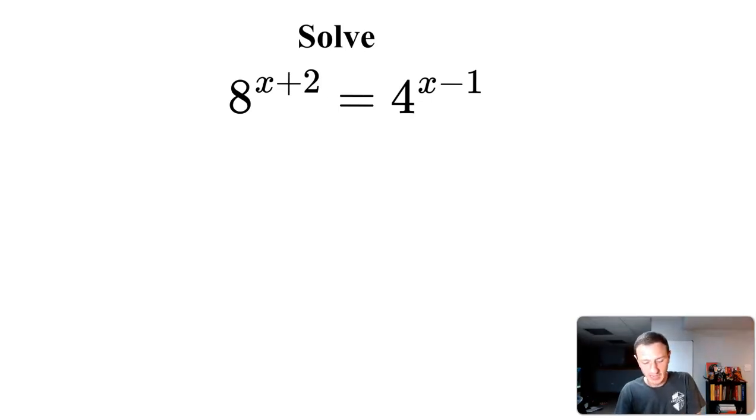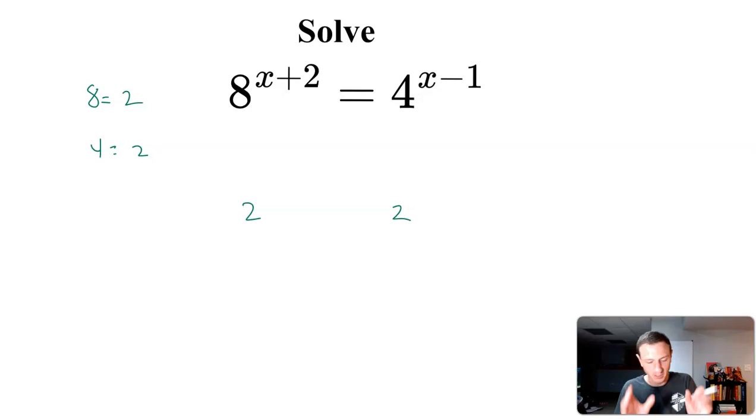So what I mean by that is: can I rewrite 8 as 2 to some power? Can I rewrite 4 as 2 to some power? And if I can, then what would happen is I'd have the same bases on both sides of my equal sign. And then there's a little rule that's going to happen with that.